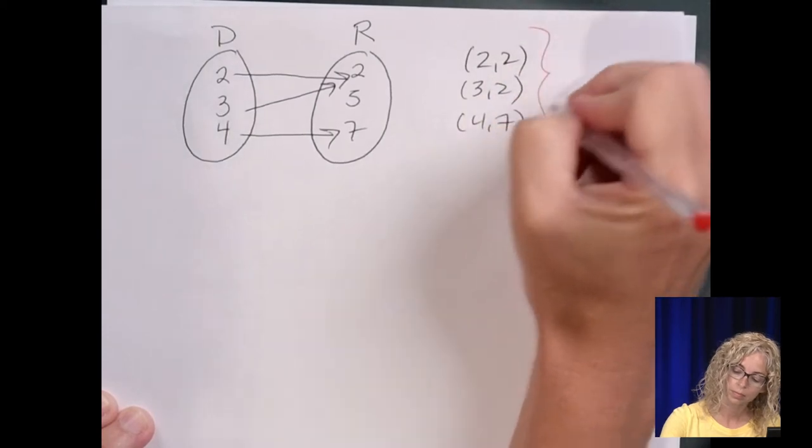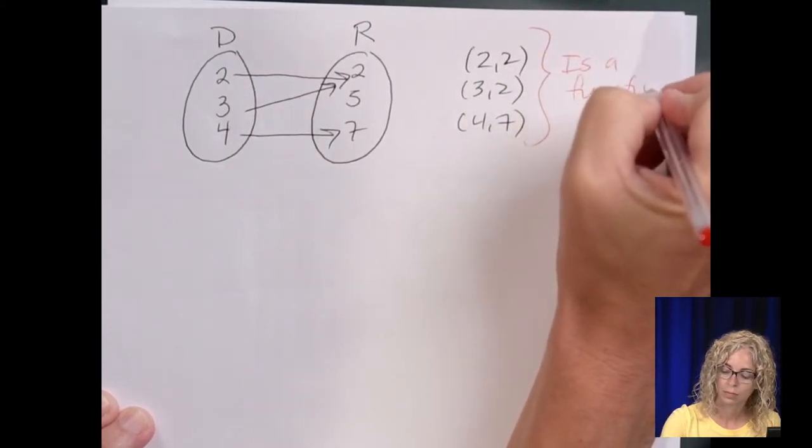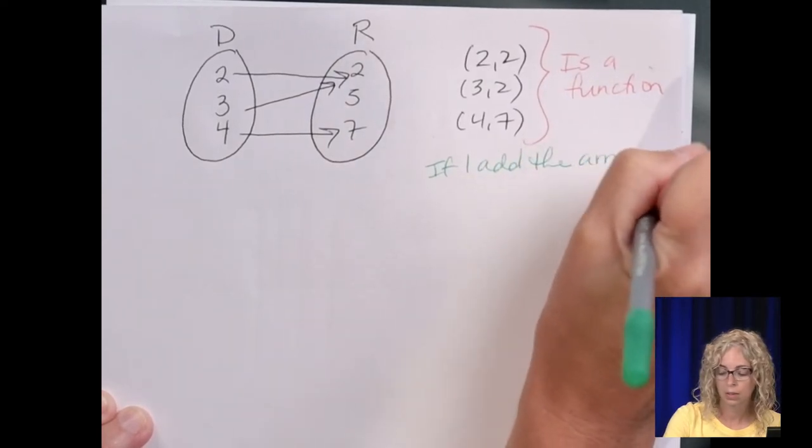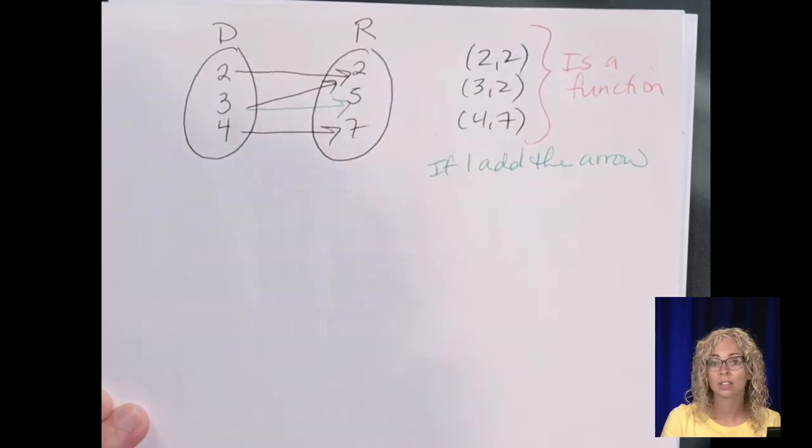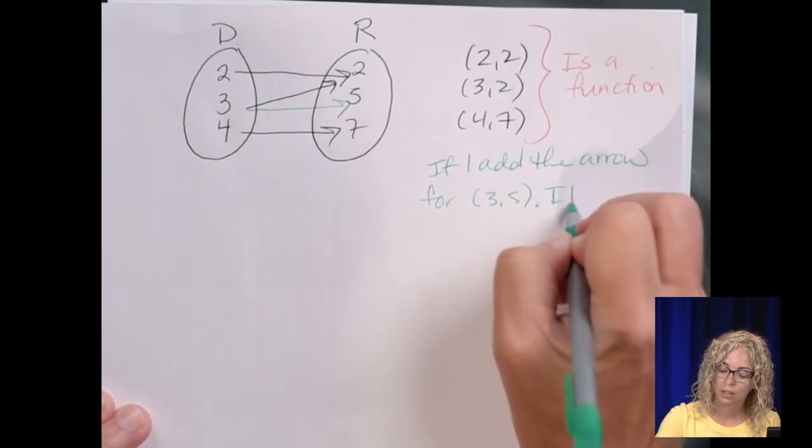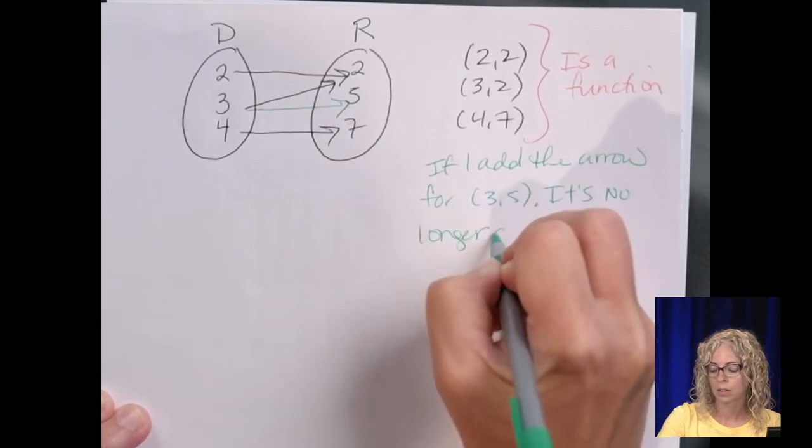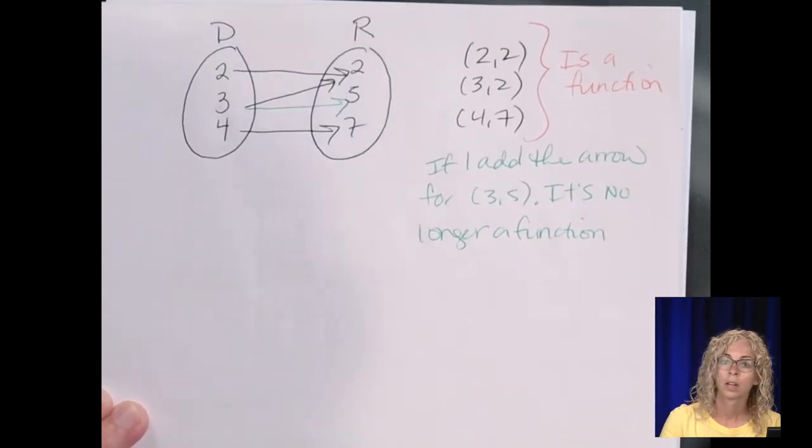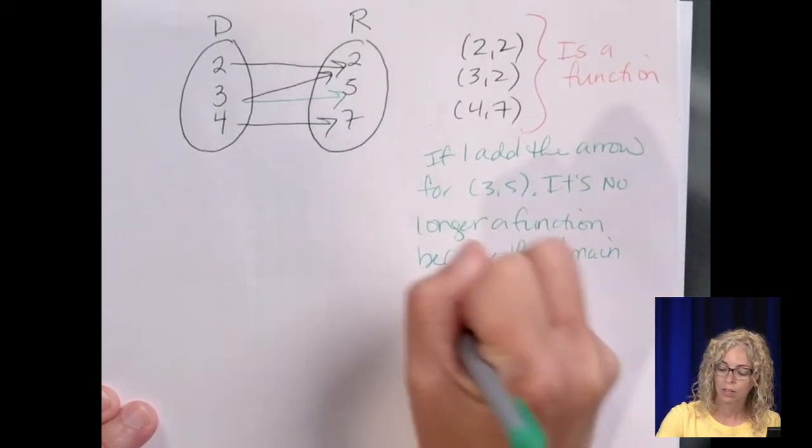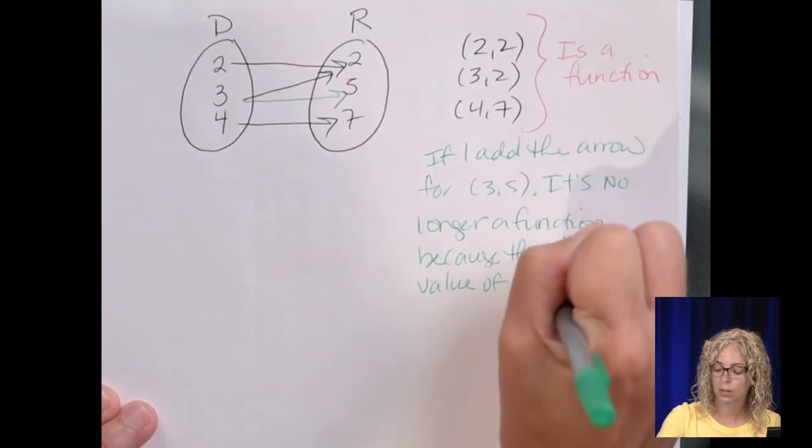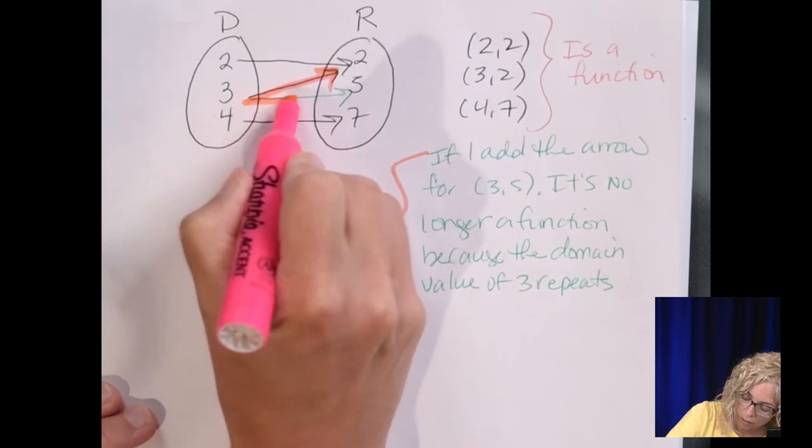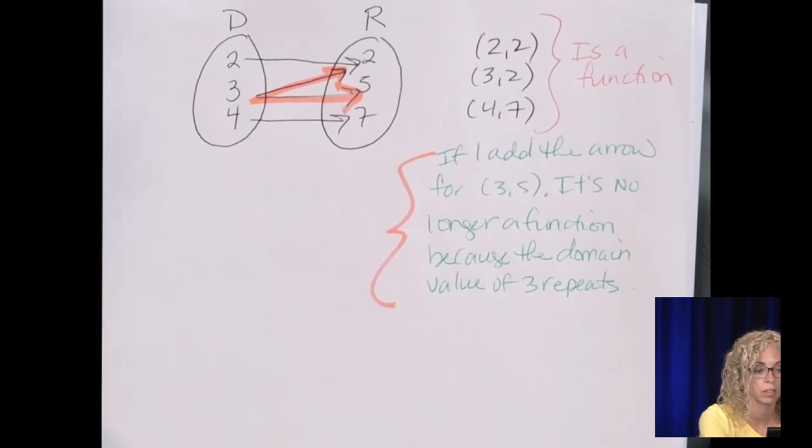But if I were to add the arrow from 3 to 5, it's no longer a function because the domain value of 3 repeats. So if you see that double arrow coming off the same domain element, it's no longer a function.